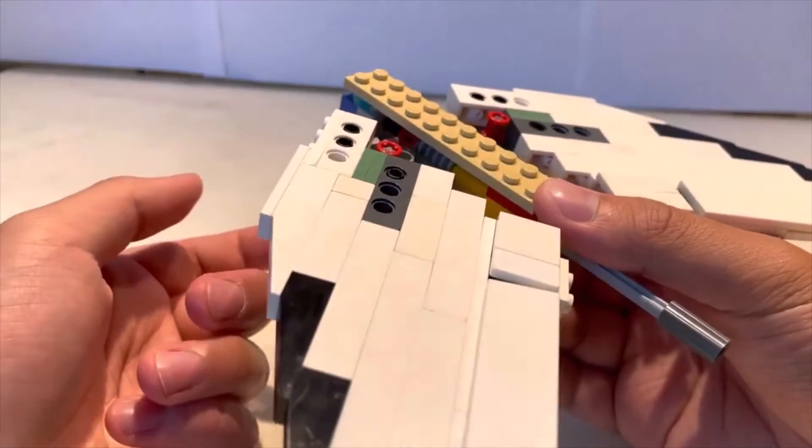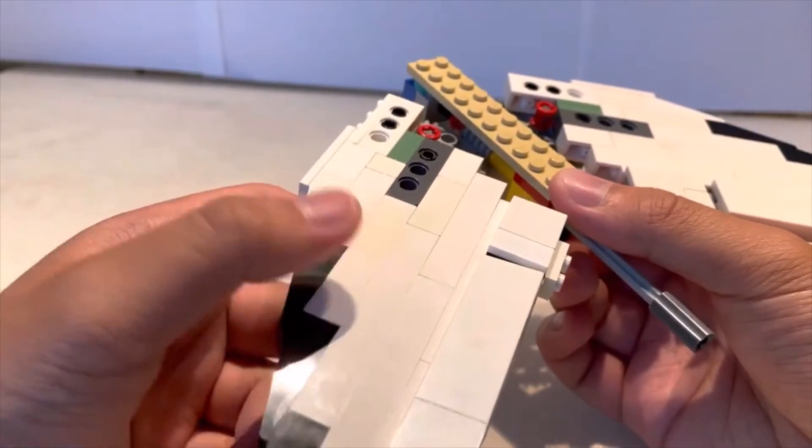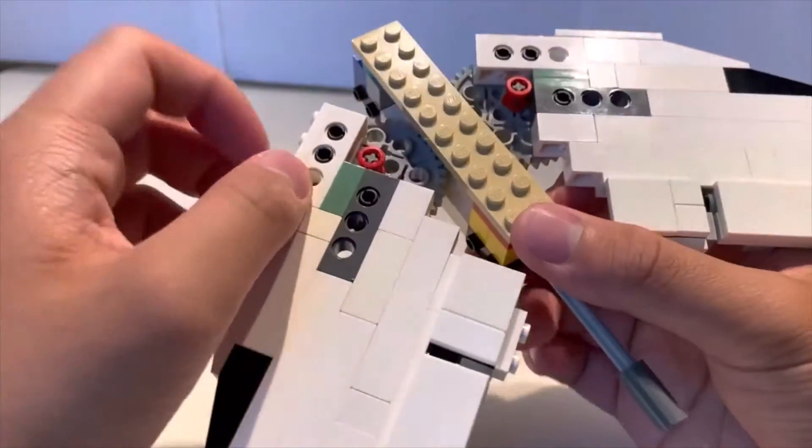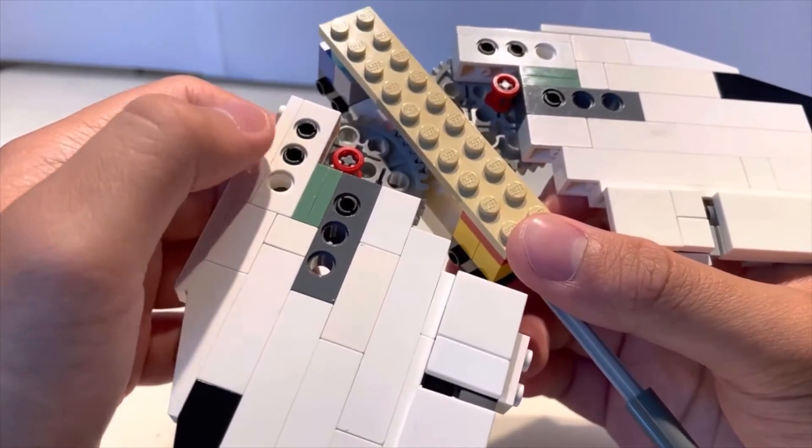That's because with the blue technique pins in the earlier version, the wings would snap off very easily. So I decided to use these technique pins and black technique bricks instead.